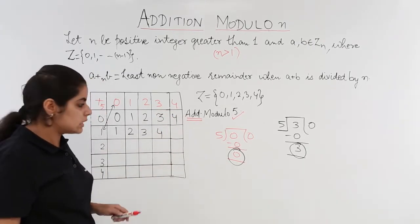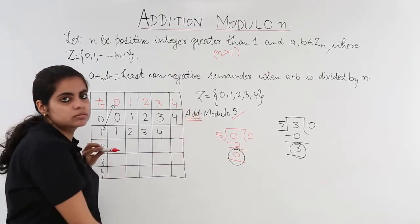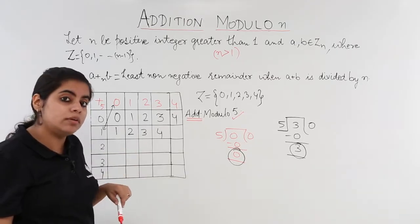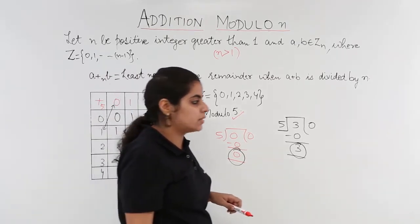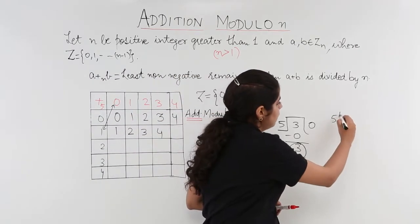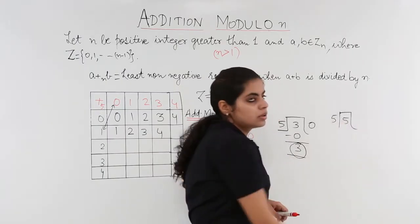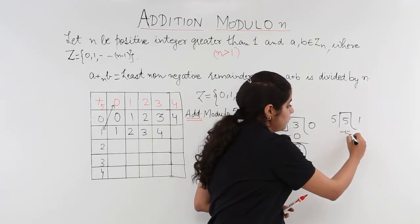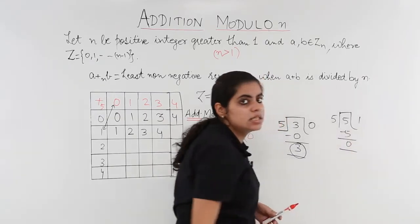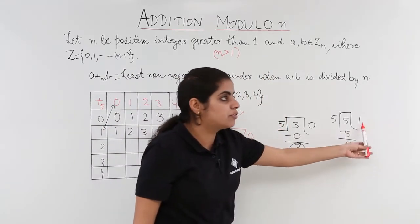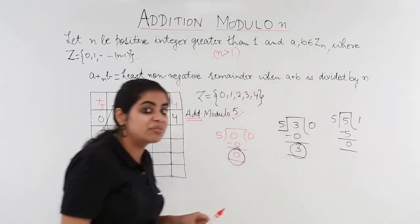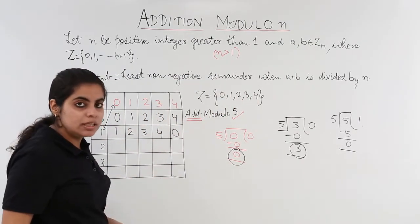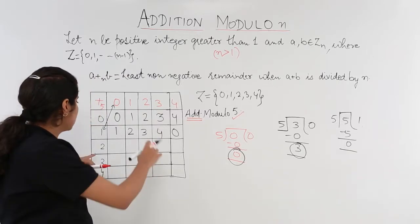Now this is something interesting: 1 plus 4 is 5. What is the remainder when 5 is divided by 5? 5 ones are 5, so the remainder is 0. You are not supposed to write 1; you write the remainder, which is 0. Similarly, we can fill the whole table quickly.